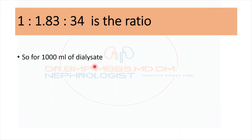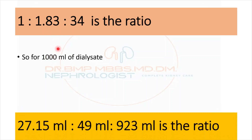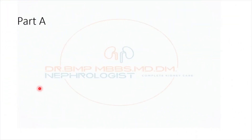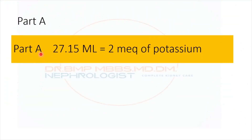For 1000 ml of dialysate, applying this ratio: approximately 27.1 ml comes from Part A, 49 ml comes from Part B, and the remaining 923 ml comes from RO water. To get this calculation, simply add all three parts — 1 + 8 + 34 = 36.83 — then divide 1000 ml by 36.83, giving approximately 27.15 ml for one part, which is Part A.